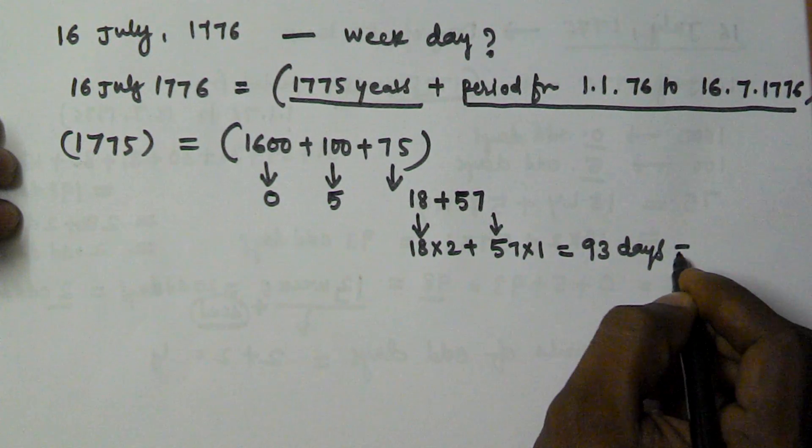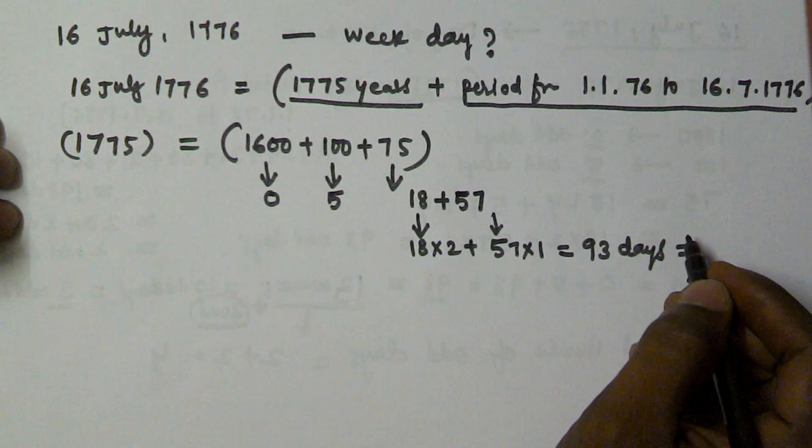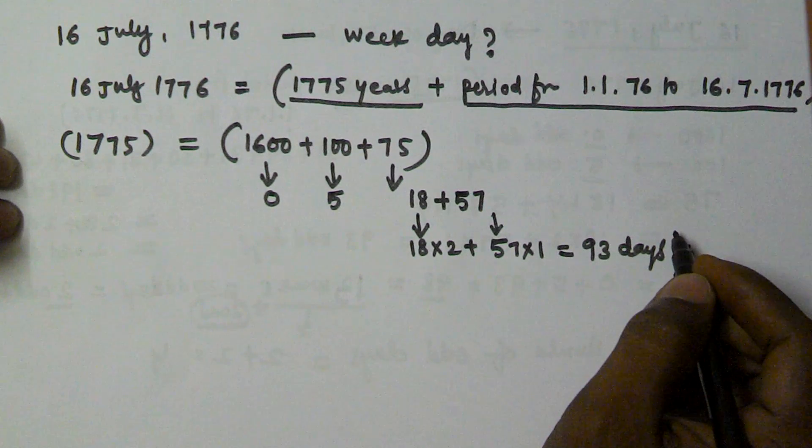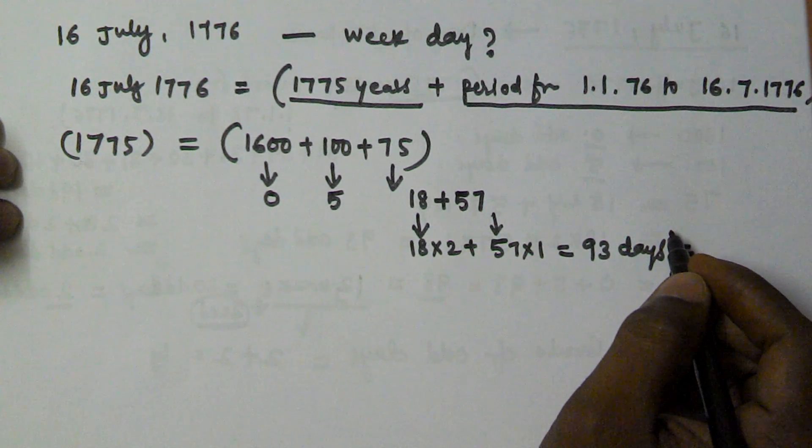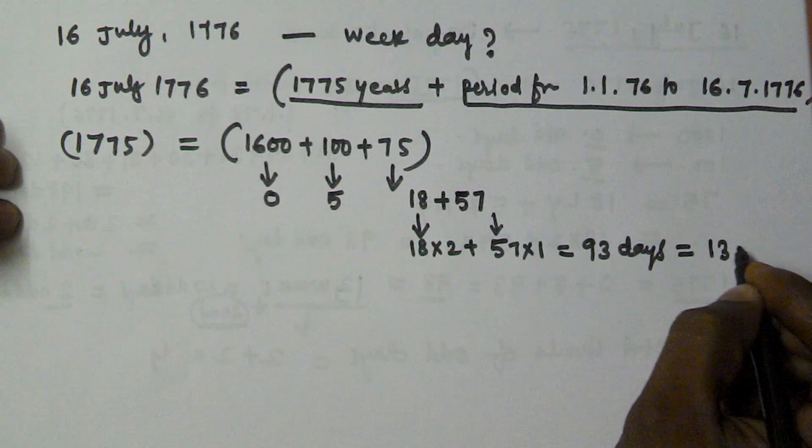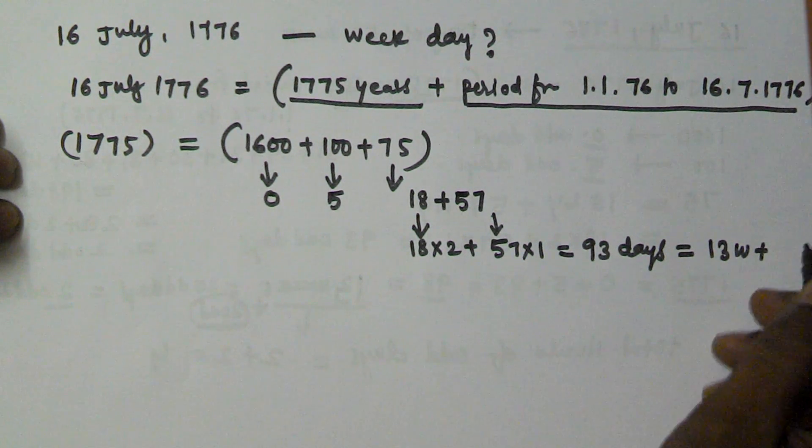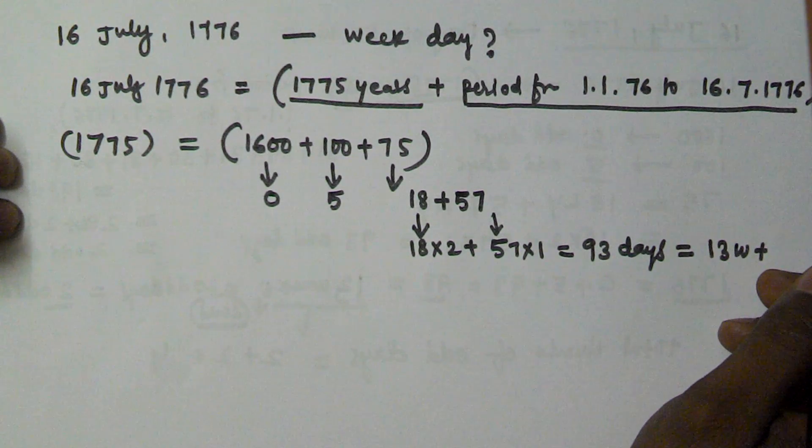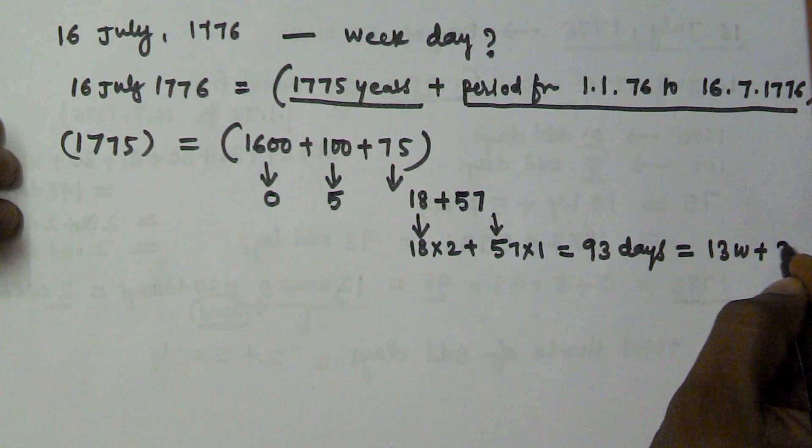So 93 days is equivalent to 13 weeks plus 2 days.